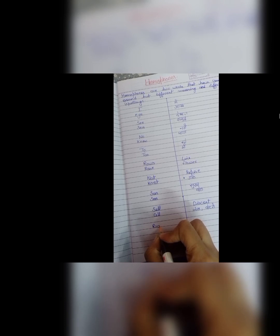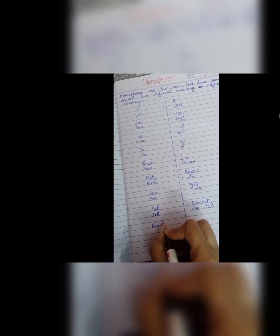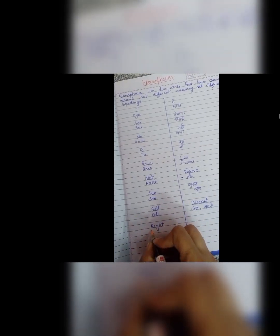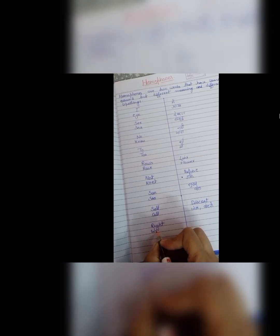Now next one is right and write. R, I, G, H, T, right. Right means sahi. This is right. This question is right. And W, R, I, T, E, write. Means likhna. You say you should have write the right thing. To both rights in one sentence.